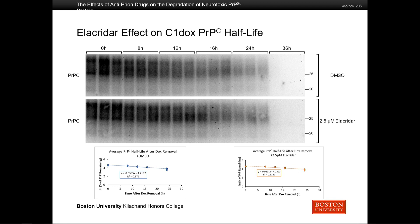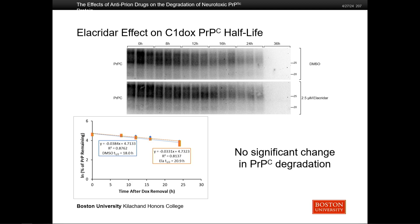Moving forward with the C1-DOX cells, we looked at the effect of alacridar on the half-life of PrPC. As you can see, there is really no noticeable effect over time across the different time points between the control condition and the drug condition — not much difference. As shown in this graph, which explicitly compares them, there's no significant change. The half-lives, which are quantifiable measures of degradation rates, are basically the same: 18 hours versus 20–21 hours, which also corresponds with previous literature on the half-life of PrPC.